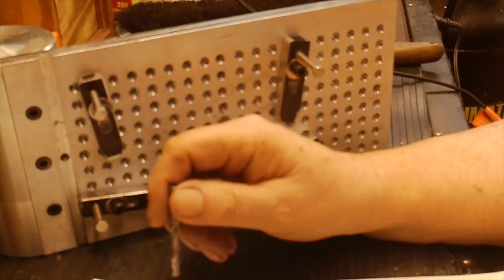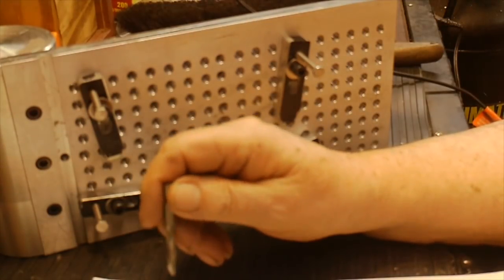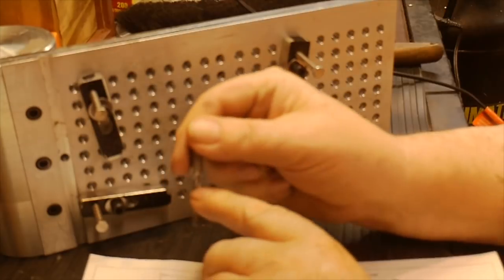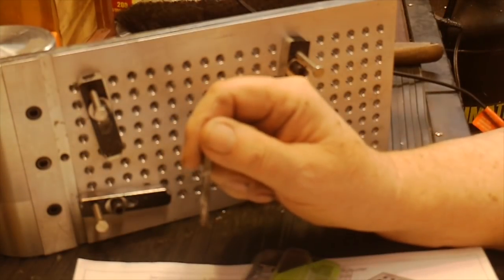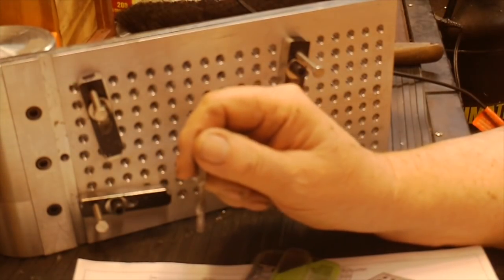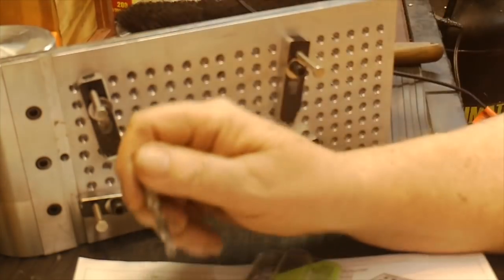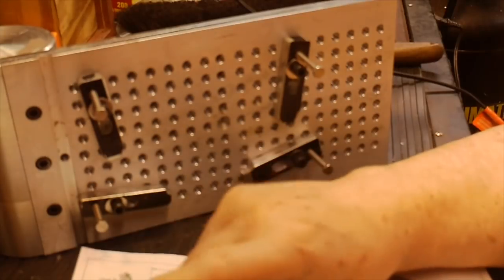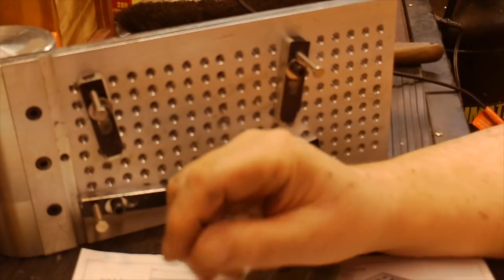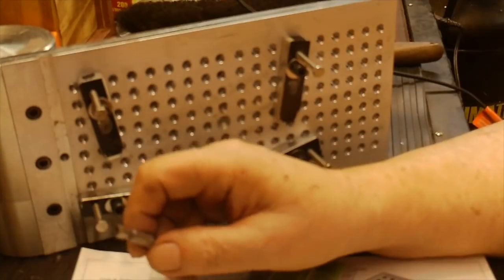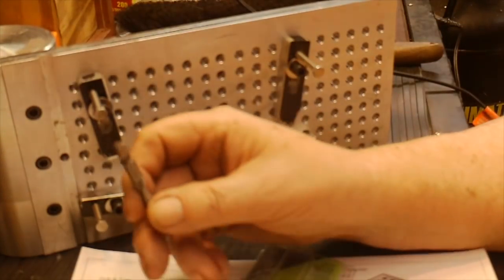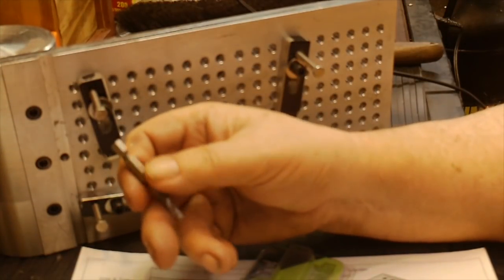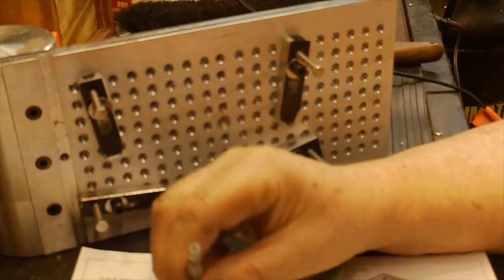I would have my hand on the switch and when it got down to about this point right here, I would flip the switch into reverse and it would back out and then go again. Before each hole I brushed Anchor Lube on it, so each one of these was brushed with Anchor Lube and drilled and tapped.